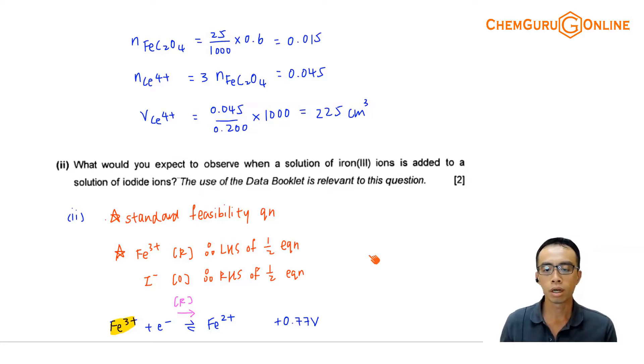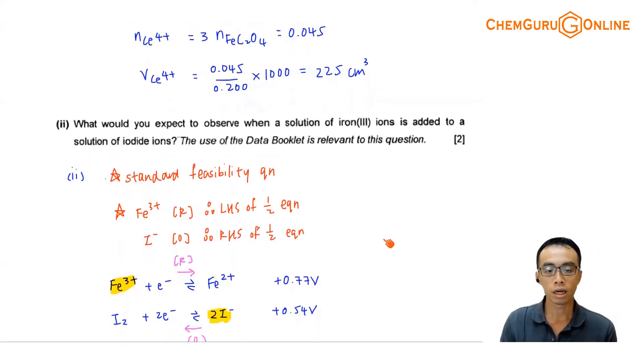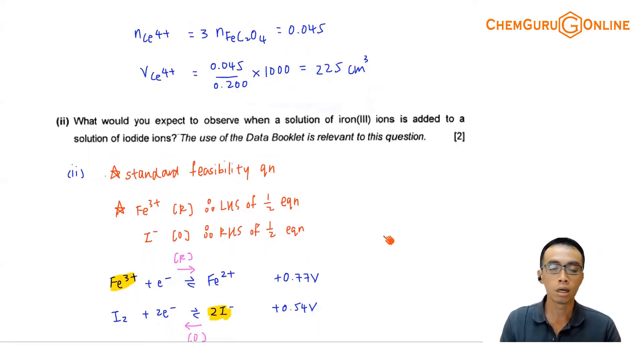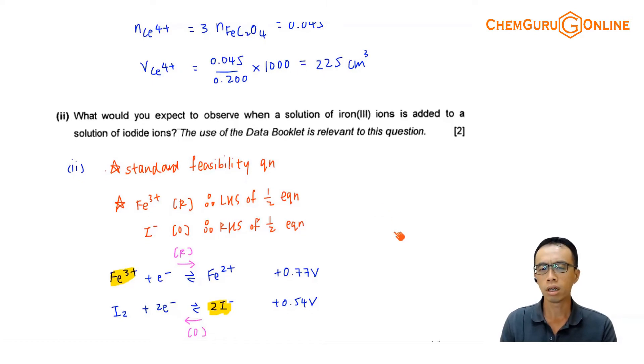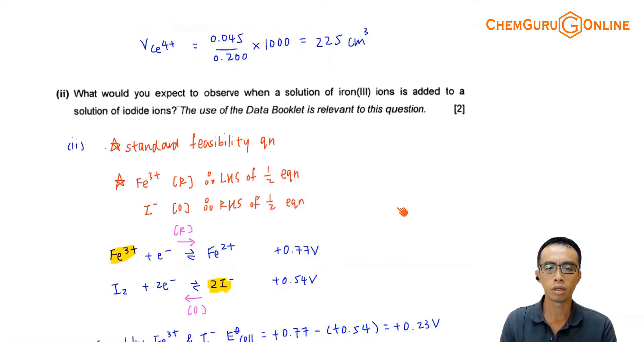But for feasibility questions, typically what we have to do is we just have to decide who is oxidized and who is reduced, and I have to choose the relevant half equation from the data booklet. Then, after that, I go and calculate the E cell, see whether the reaction is feasible or not feasible, depending on whether the E cell is positive or negative. And for feasibility question, I think for A levels, the feasibility question should be pretty simple.